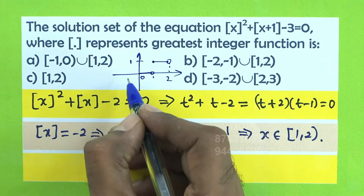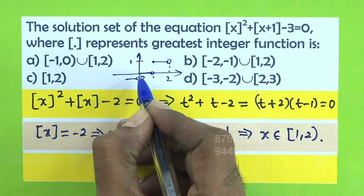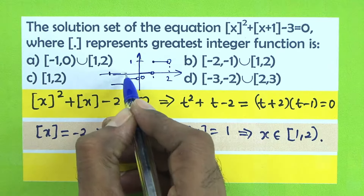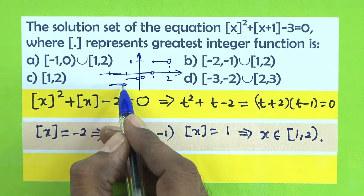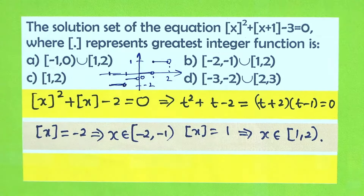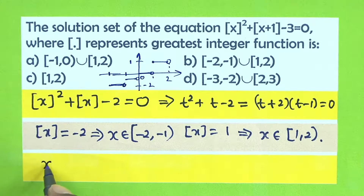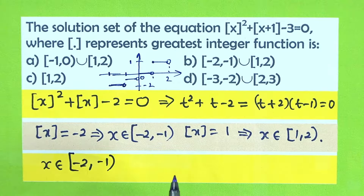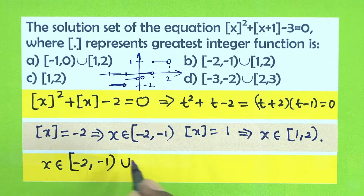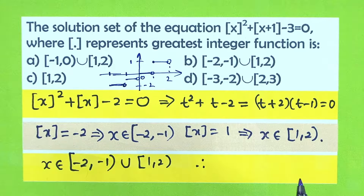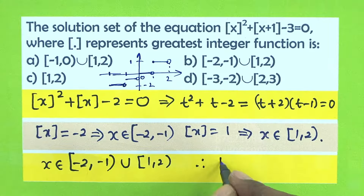So when the integral part is -2, x is in [-2, -1), and when it is 1, x is in [1, 2). Therefore x belongs to [-2, -1) ∪ [1, 2), including -2, excluding -1, union 1 to 2 including 1, excluding 2. Option B is correct.